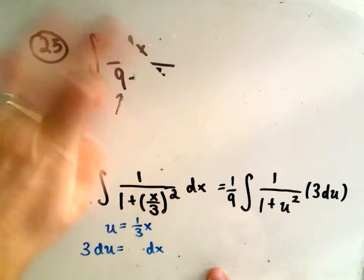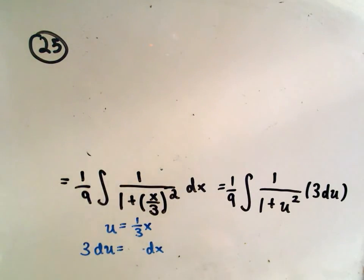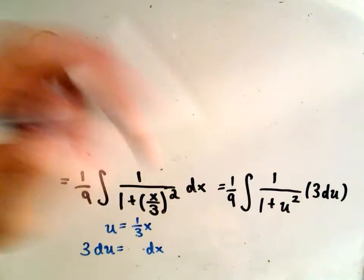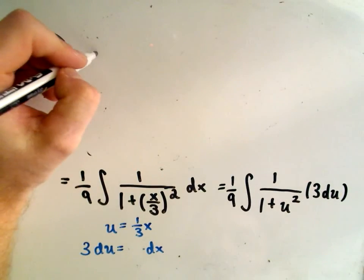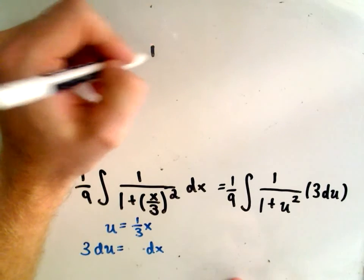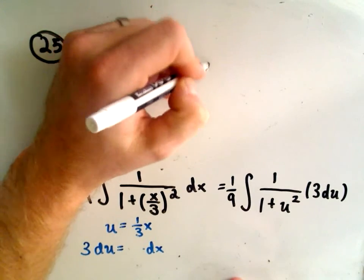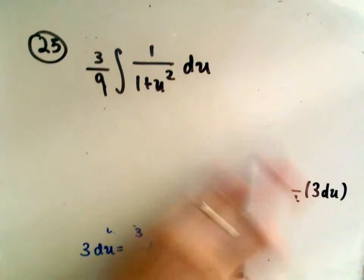Now we're almost there. We've kind of done the tricky part of these problems. The 3 I'm going to pull out front and multiply that by the 1/9th, so I'll get 3/9ths. And I'll reduce that in just a second. And then we've got 1 over 1 plus u squared du. Well, now this is just our arctangent formula.